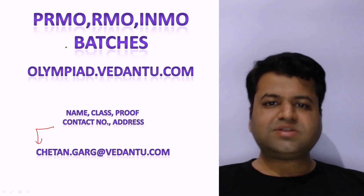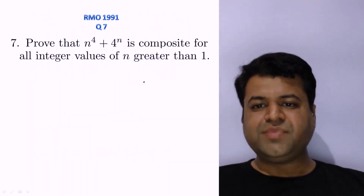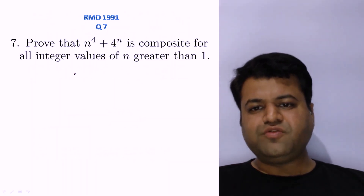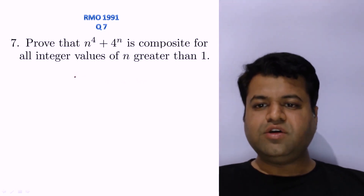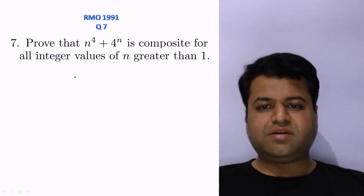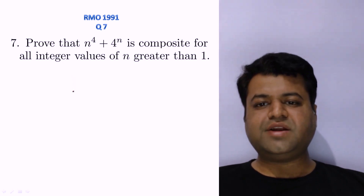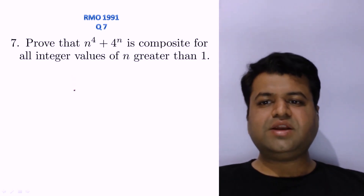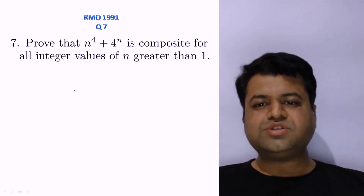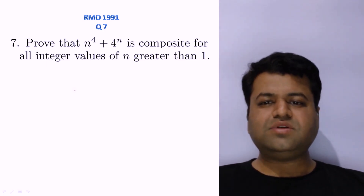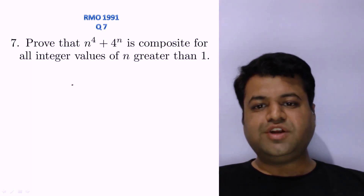Let's start our session. This is question number seven of year 1991. We need to prove that n⁴ + 4ⁿ is composite for all integers greater than 1. Those who have not solved this question yet, please pause the video, give it a genuine attempt, and then come back to watch the solution.